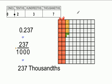So this is 100, this is 100, and then 10, 20, 30, and then 7. So you could write that .237, and you could write that as 237 over 1000, or in words, 237 thousandths.